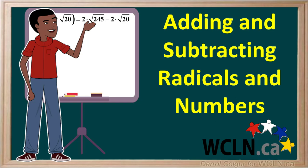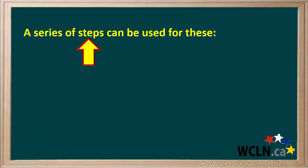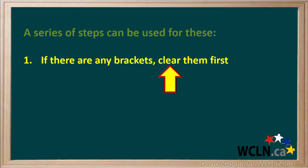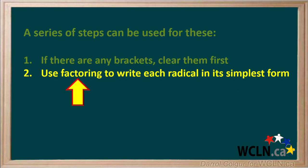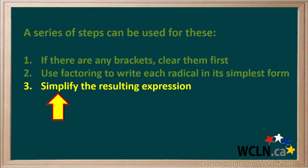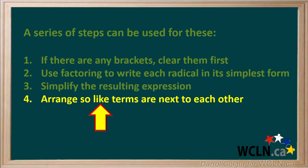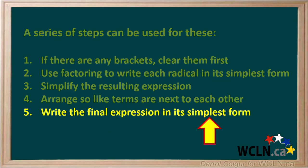Sometimes we have to add or subtract expressions containing both numbers and radicals. A series of steps can be followed for these. If there are any brackets, start by clearing them. Next, check radicals, and if they can be factored, factor them to their simplest form. Then simplify the resulting expression. Next, arrange the expression so like terms are next to each other. Lastly, write the final expression in its simplest form.